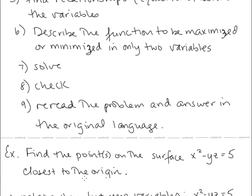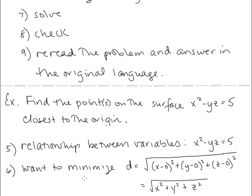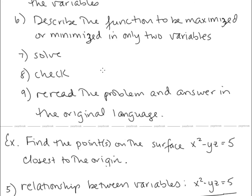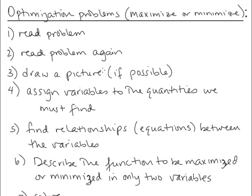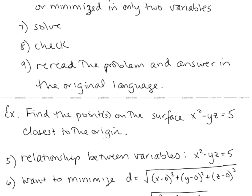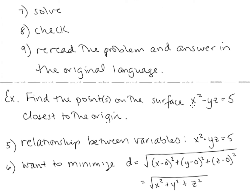Let's take a look at an example. We want to find the points on the surface x² minus yz equals 5 closest to the origin. Following our optimization steps, we read the problem. In this problem we don't really need to draw a picture. The variables we want to find are x, y, and z because we're looking for the coordinates of a point or points. The relationship between x, y, and z is x² minus yz equals 5.